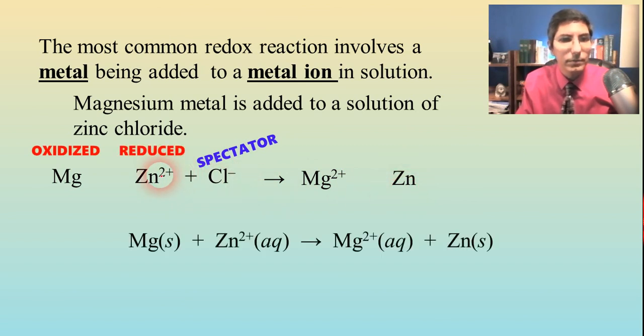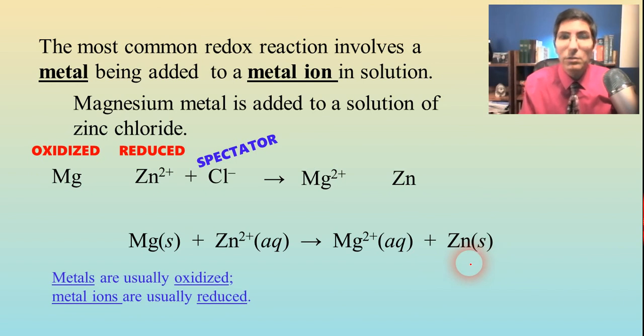Whenever we write the overall balanced equation, it's always good to put in the states. So Mg(s) added to Zn 2+(aq), and we get Mg 2+(aq) and then plain old zinc metal, which is a solid. So once again, notice metals are usually oxidized. Metal ions are usually reduced.